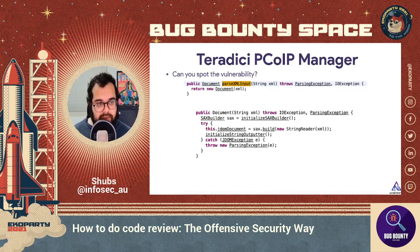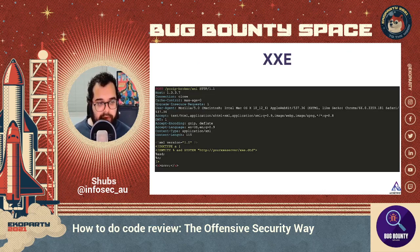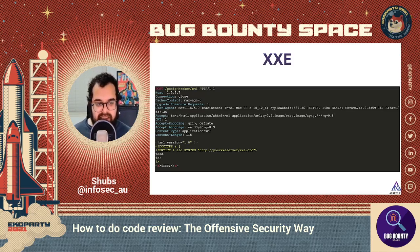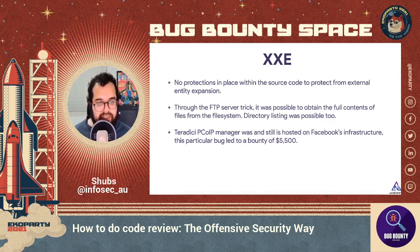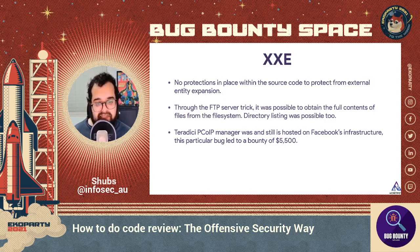Here's what the PoC looks like: you POST to a specific endpoint and include XML input containing your DTD. When the XML is parsed it reaches out to your DTD and evaluates its contents, leading to local file disclosure and server-side request forgery. No protections were in place to protect from external entity expansion. Through the FTP server trick it was possible to obtain full contents of files from the filesystem, and directory listing was possible as well. Teradici PCoIP Manager is hosted on Facebook's infrastructure and this bug led to a bounty of five thousand five hundred dollars.